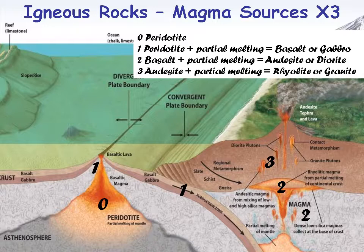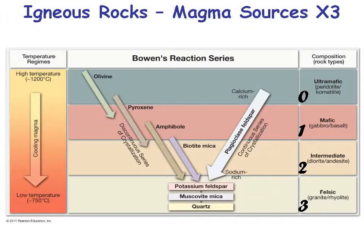Here's where we'd find the rocks at different plate boundaries. Peridotite is the asthenosphere mantle rock. Take peridotite, partially melt it, get gabbro. Take gabbro or basalt, partially melt it, get diorite or andesite. Take andesite or diorite, partially melt it, get rhyolite or granite. I'm showing this again because Bowen's reaction series is so important — start at zero, go to one, two, three, and the temperature changes as you go from zero to three.